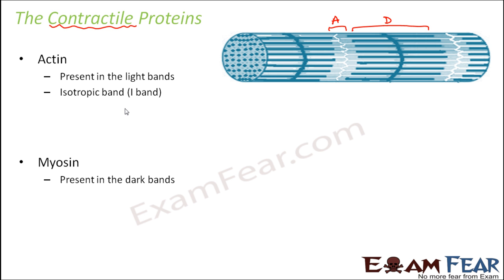Actin forms the isotropic band, abbreviated as the I-band. Isotropy means properties are the same throughout the region. In the light band, you see only actin filaments (white lines) throughout — the entire light band is made up of only one protein, actin. So it is called isotropic because it is homogeneous.